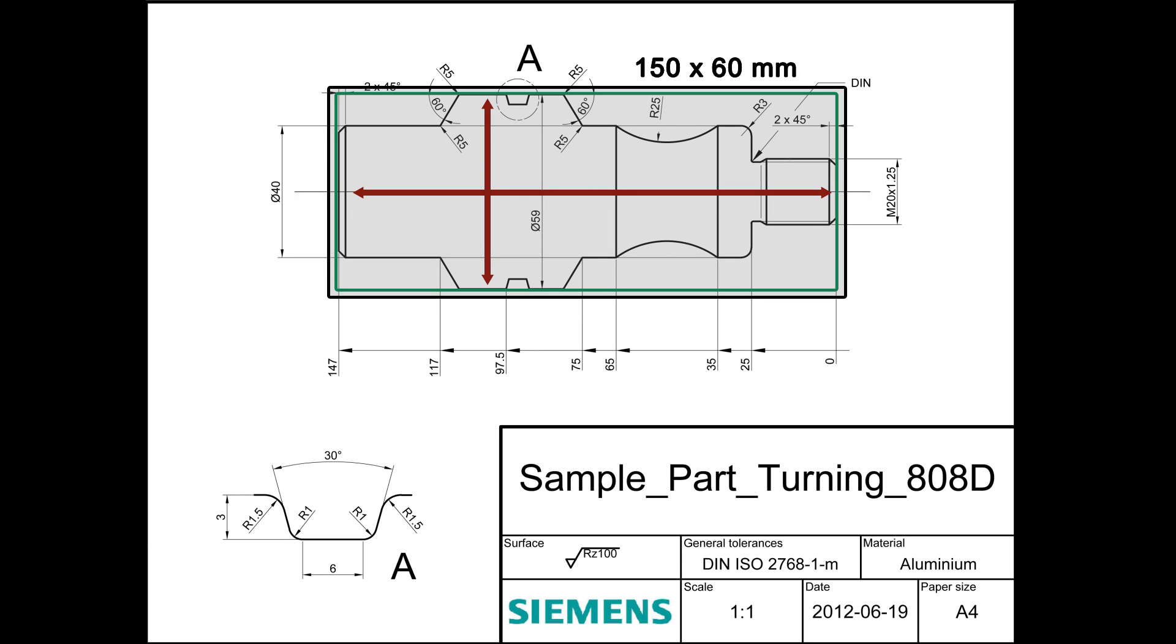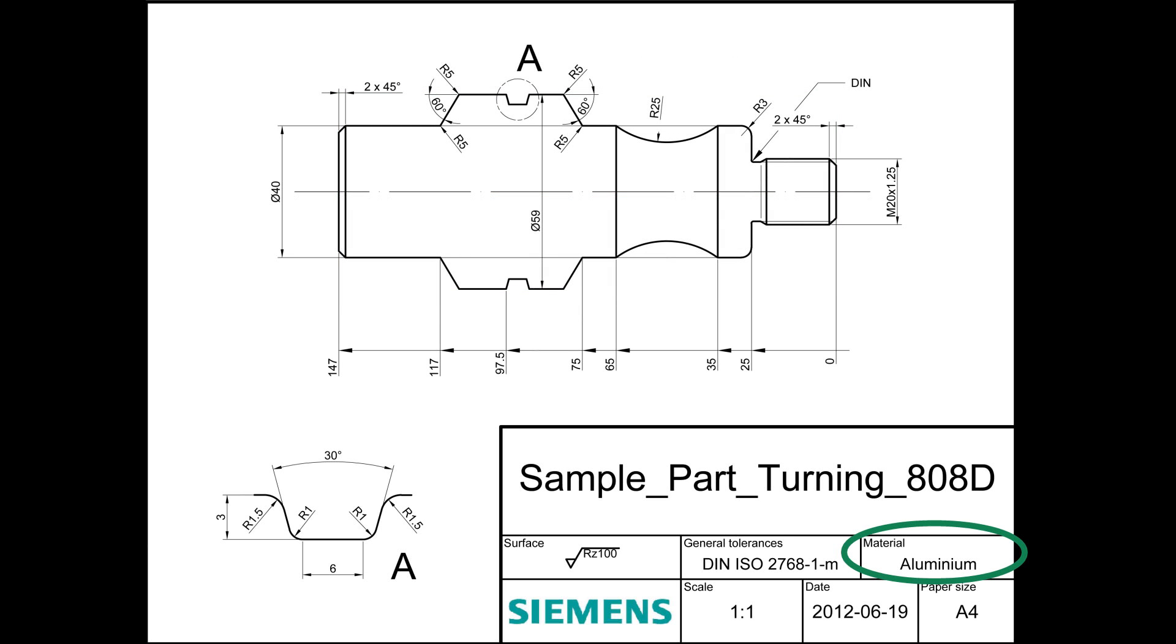This allows us to have a smooth surface, as the raw material is rough. We will use aluminum for our sample parts, as required in the drawing.